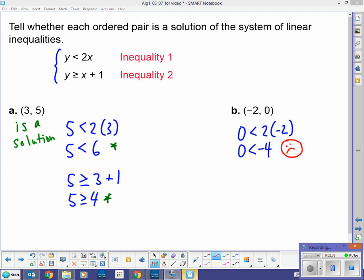0 is not less than negative 4. So, I could actually stop here since it's not a solution for the first one. It doesn't matter whether it's a solution for the second one. So, this is not a solution. Remember, to be a solution to the system, it has to be a solution to both parts, to both inequalities in that system.